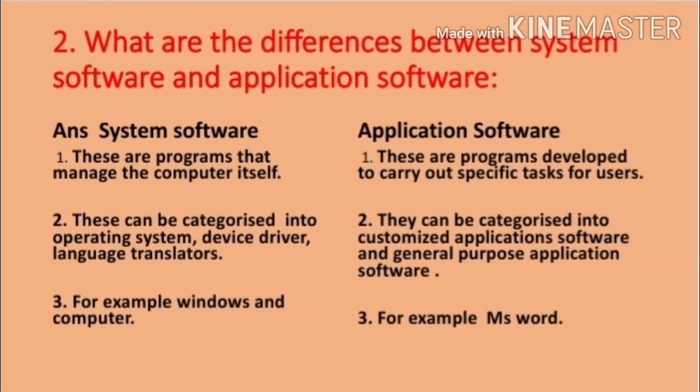Question number 2. What are the differences between system software and application software? System software: 1. These are programs that manage the computer itself. 2. This can be categorized into operating system, device driver, and language translator. 3. For example, Windows.